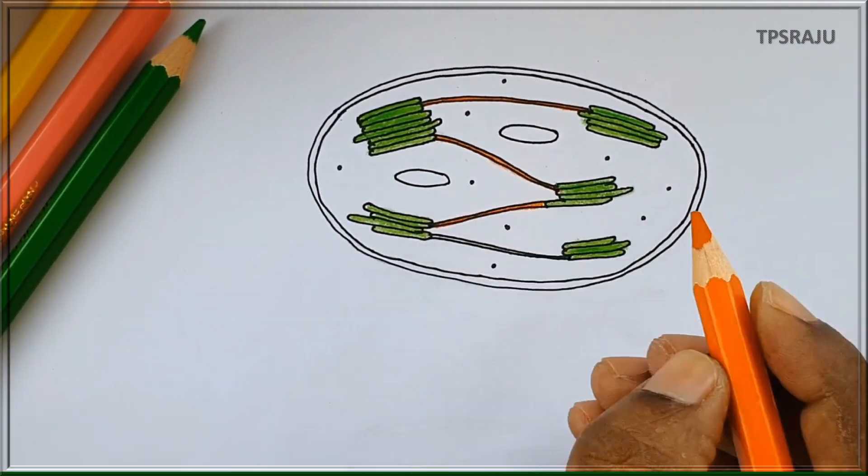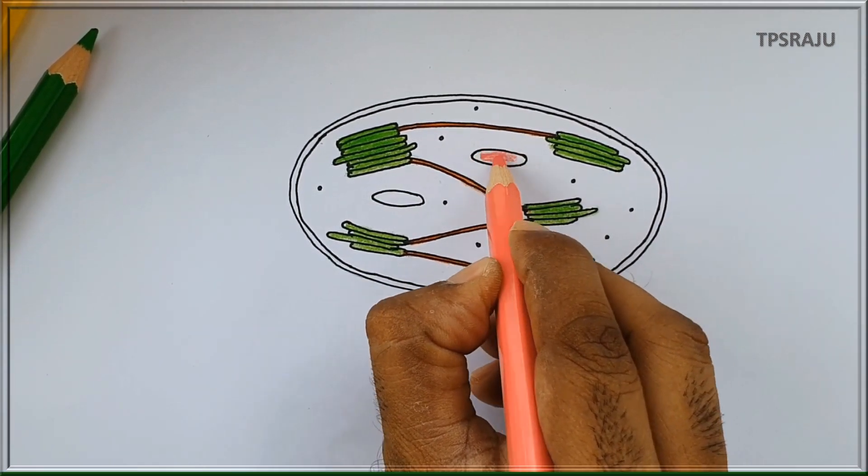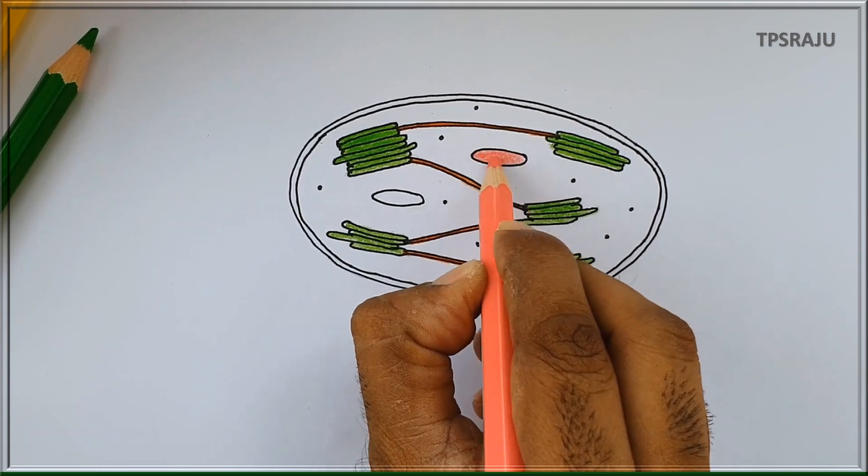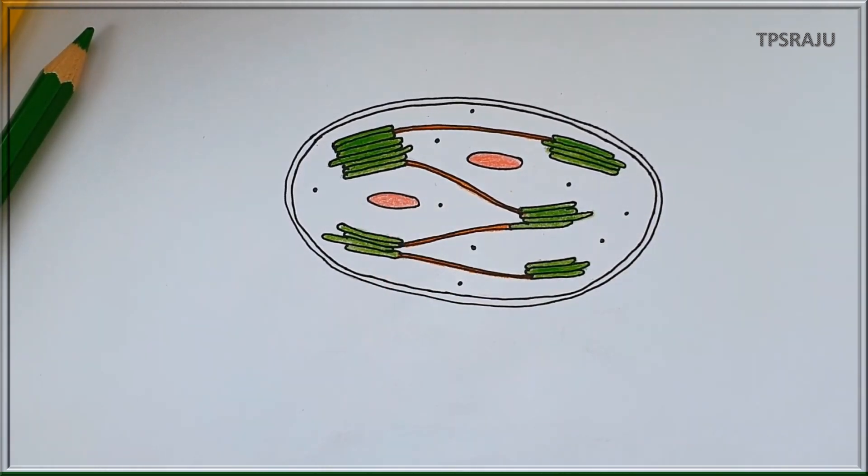Orange color to stroma thylakoids. Pink color to starch granules. Black dots indicate fat globules.